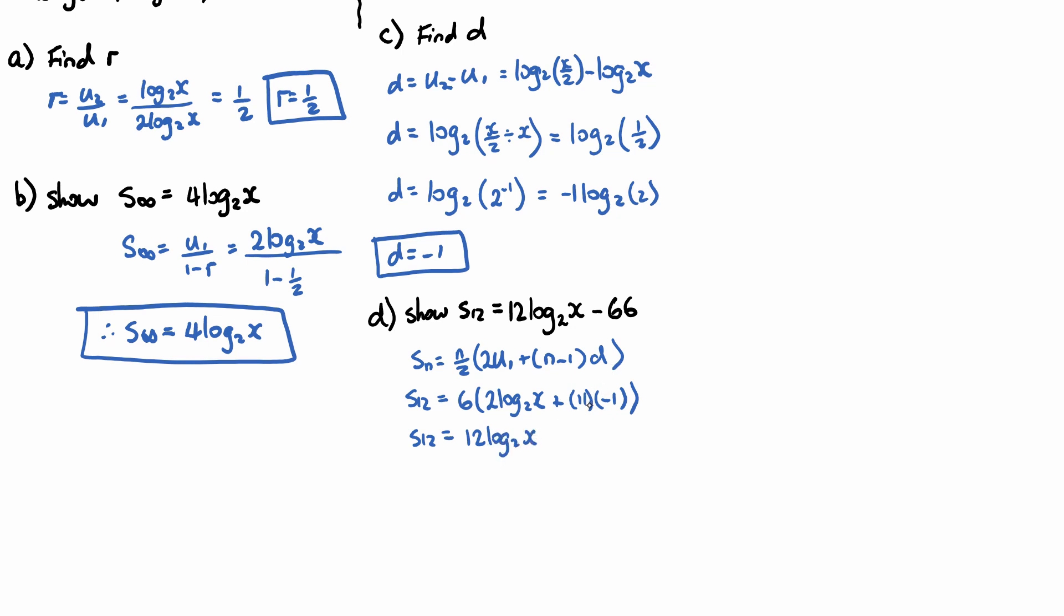And then 11 times our negative 1 will be negative 11, but we also need to multiply it by our 6 at the front, so minus 66.